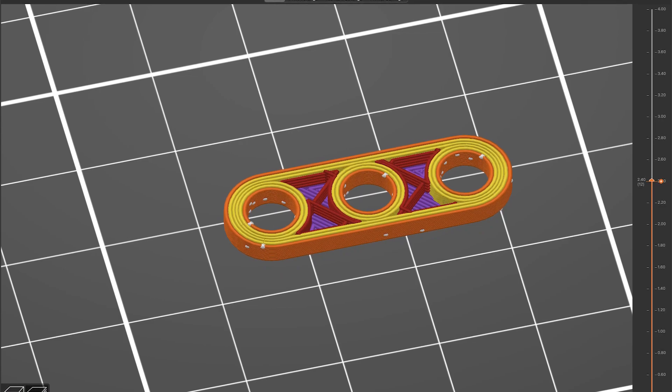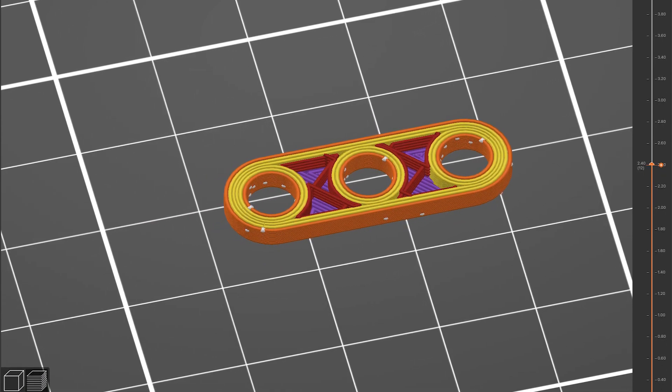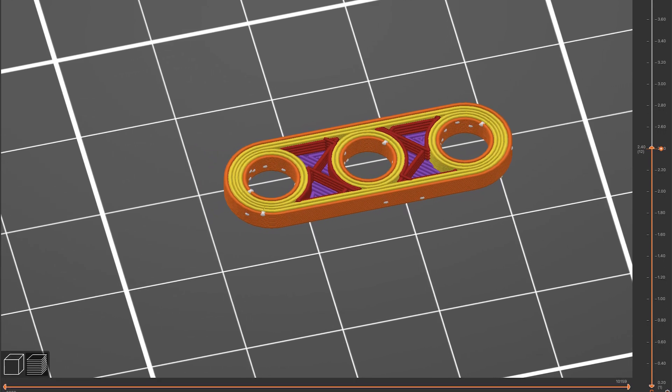Print all the links with at least three perimeters. That way, the outer wall of the link and the inner wall of each hole merge into a single stronger frame.